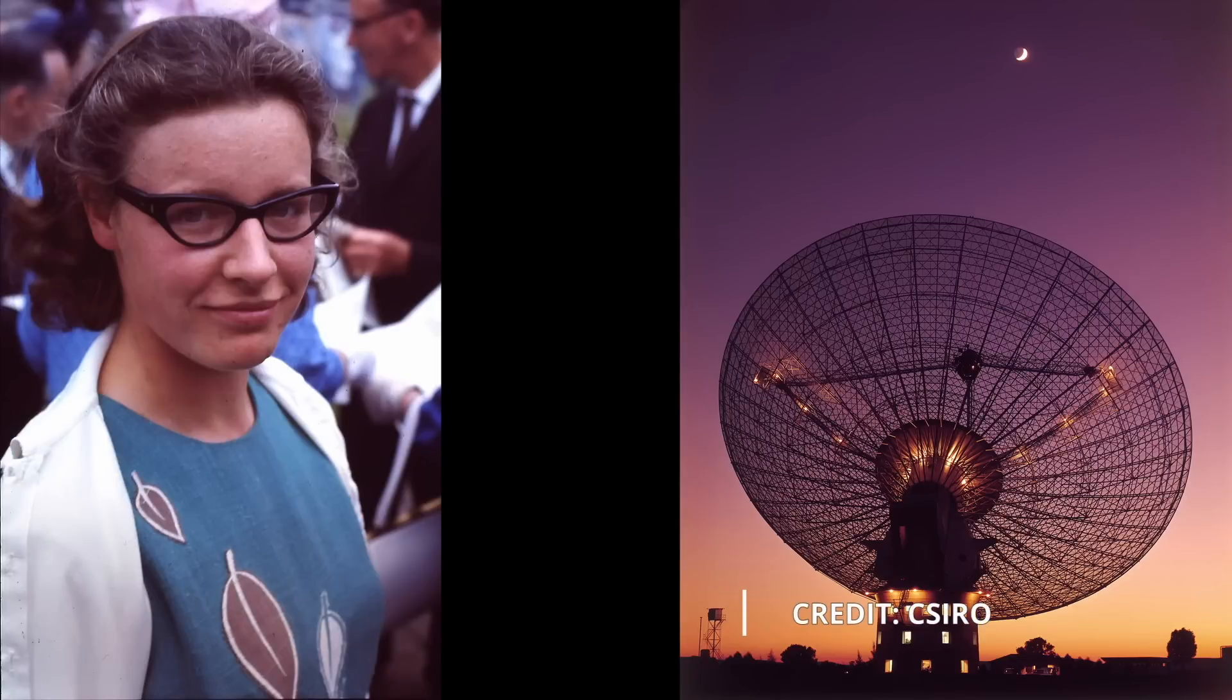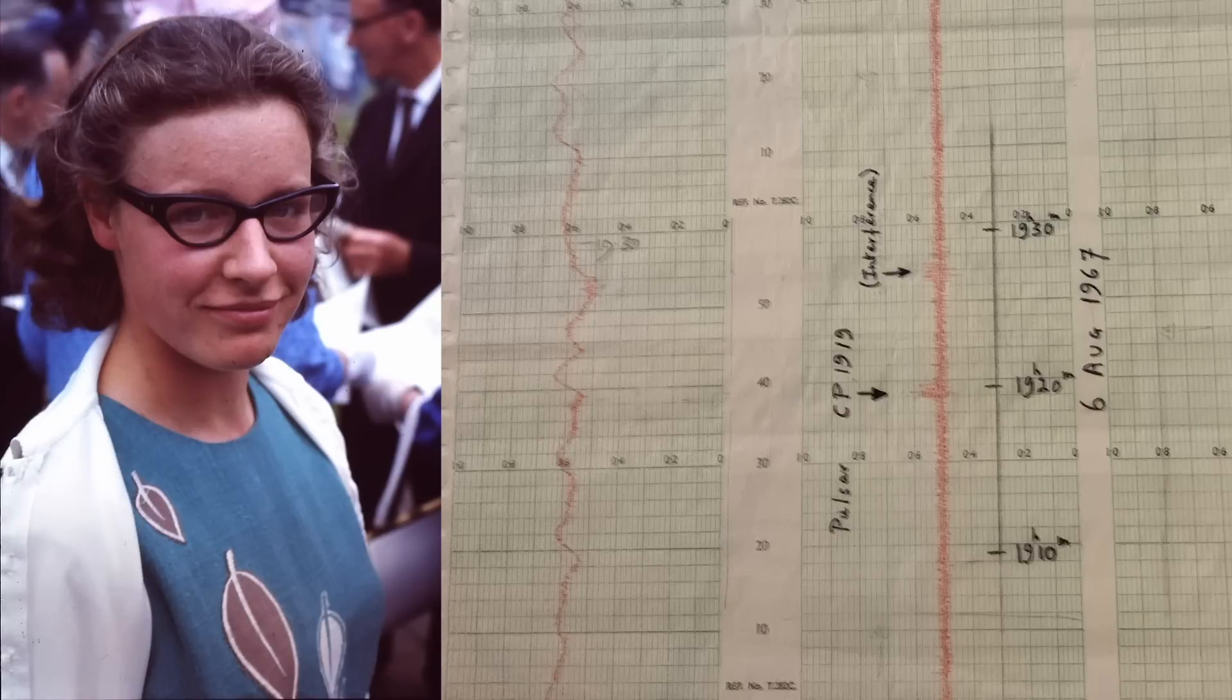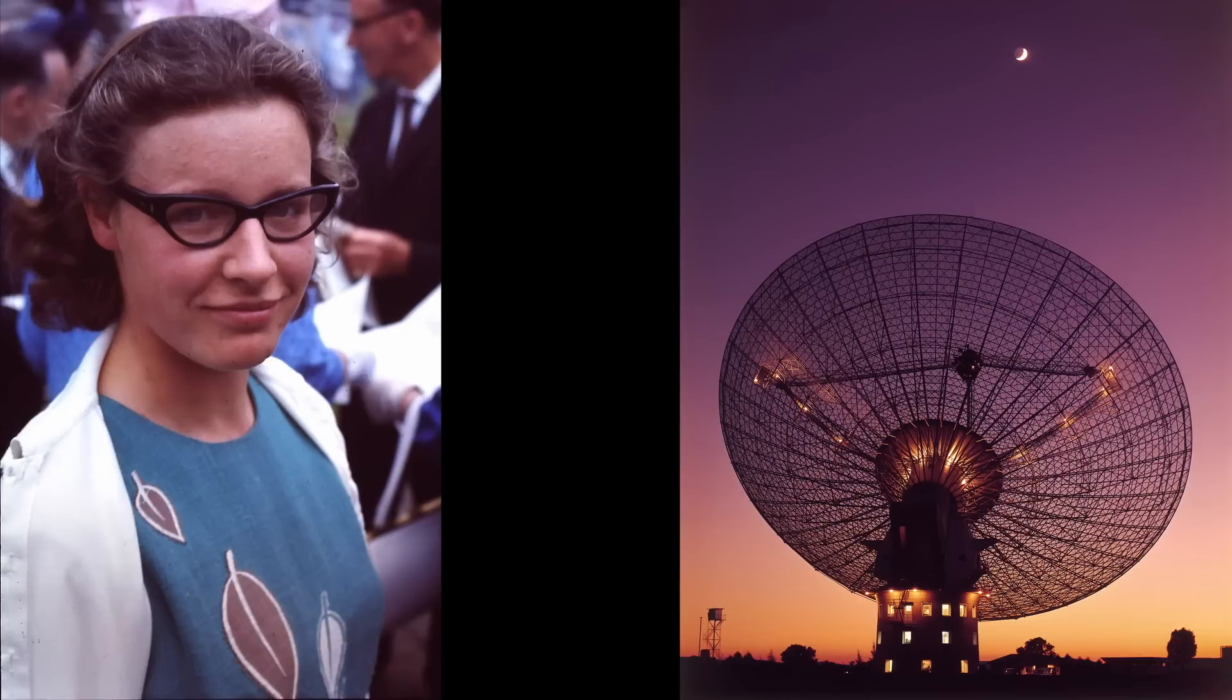Back in 1967, Jocelyn Bell Burnell, using a newly commissioned radio telescope, discovered a very strange signal. It was initially dismissed as radio interference by her supervisor, but continued observations showed that it appeared at the same declination and right ascension, which ruled out a terrestrial source of interference.